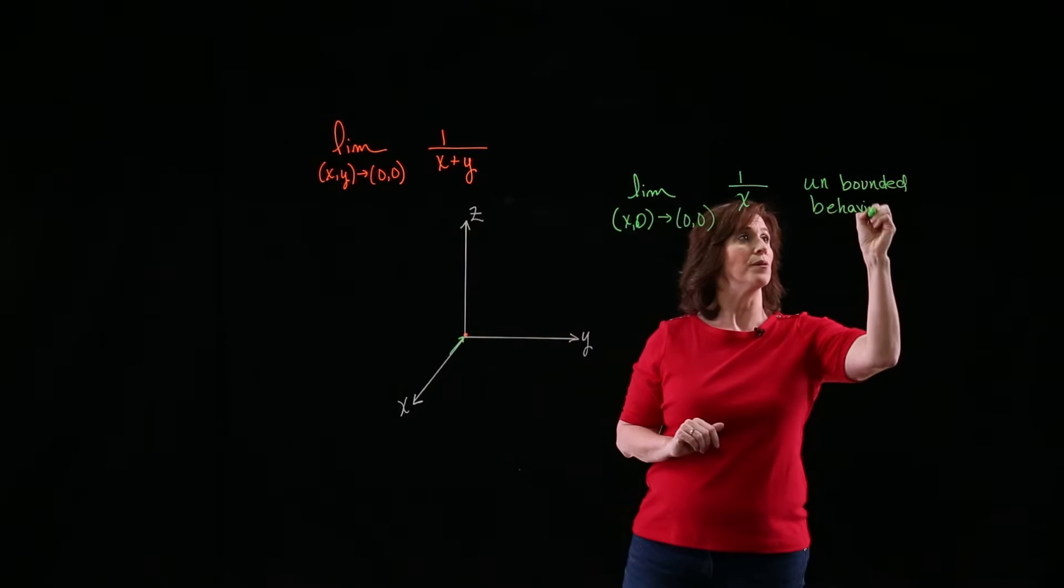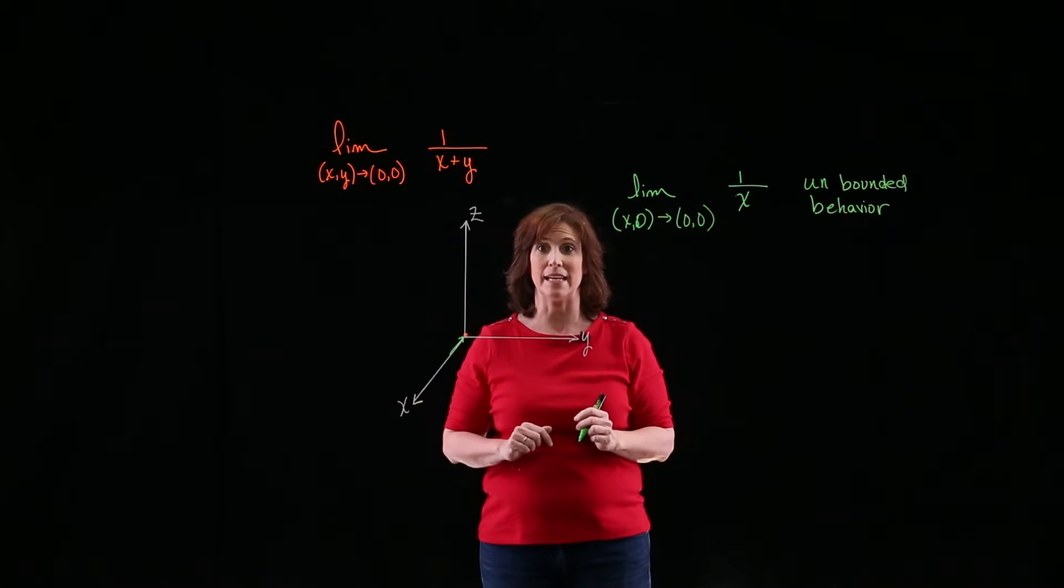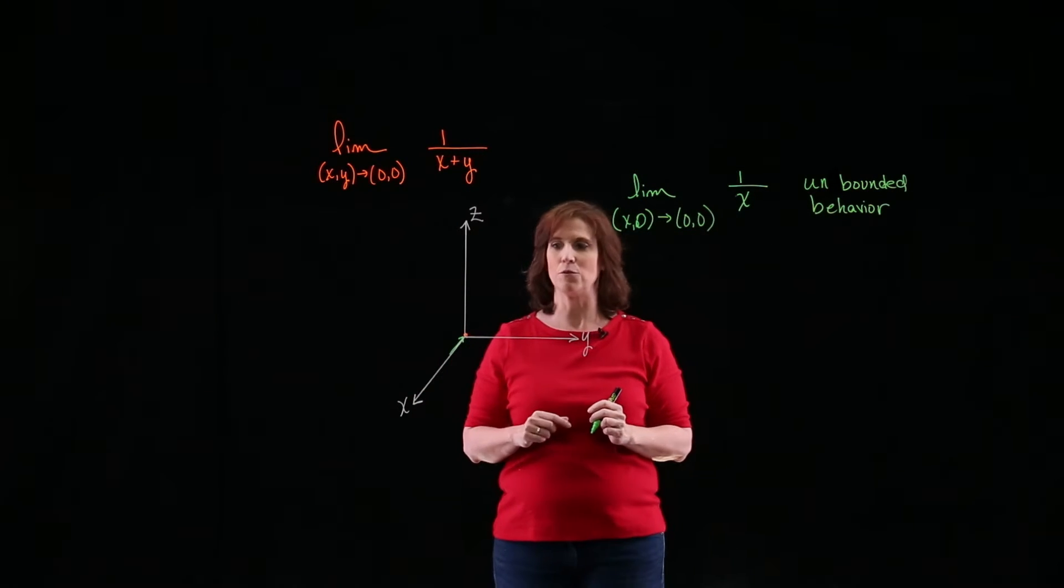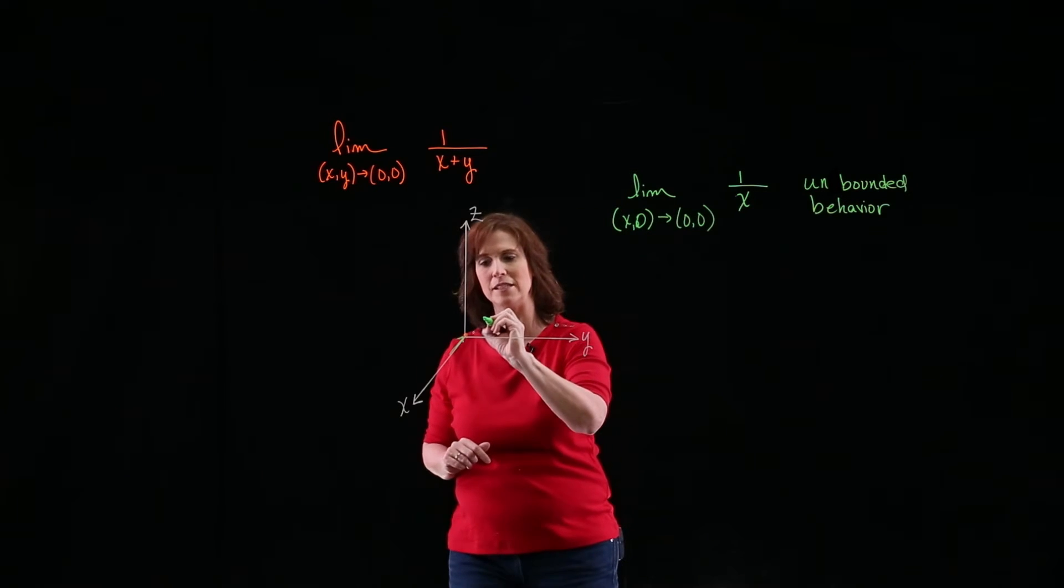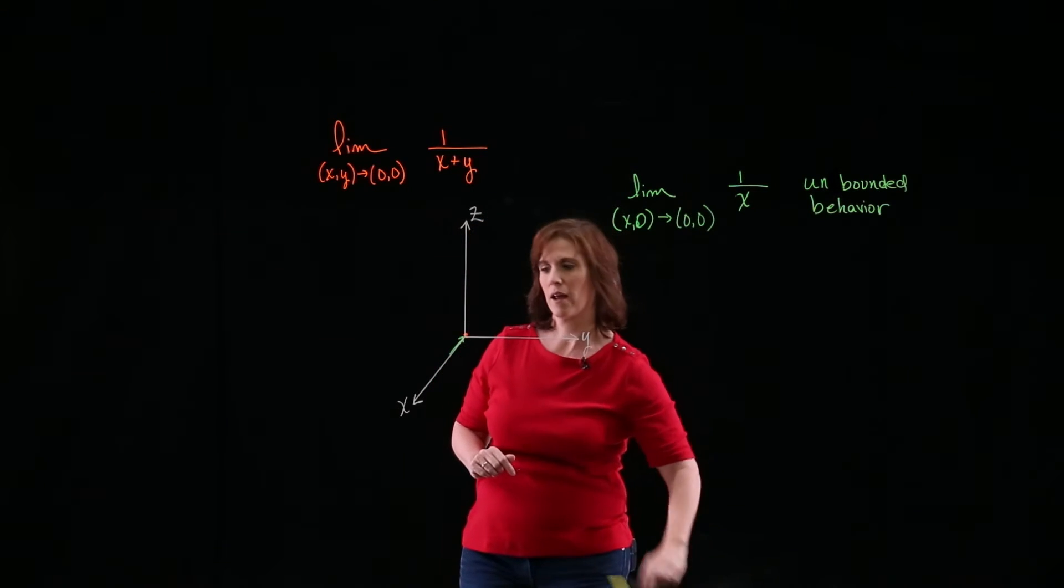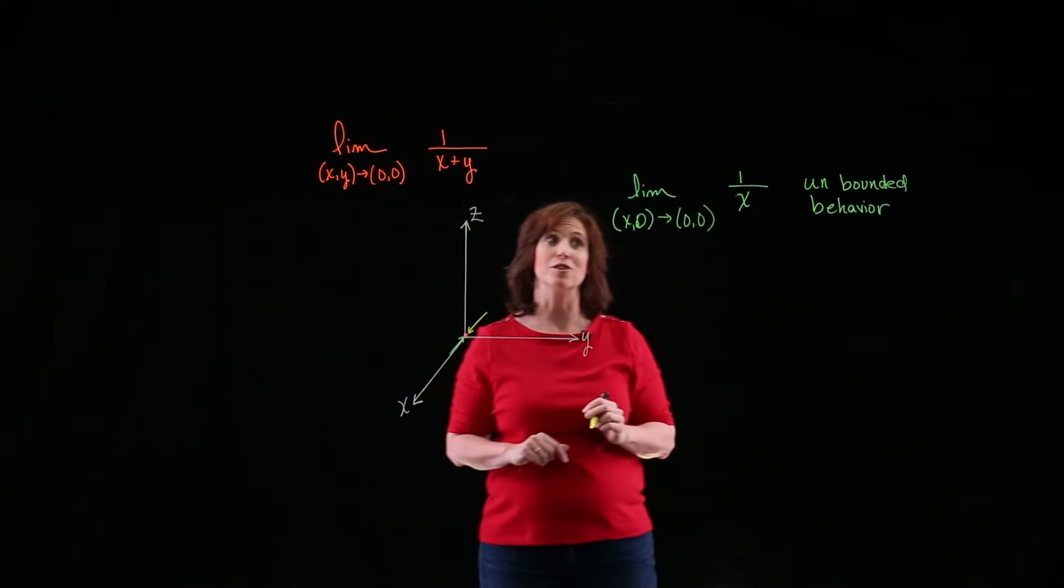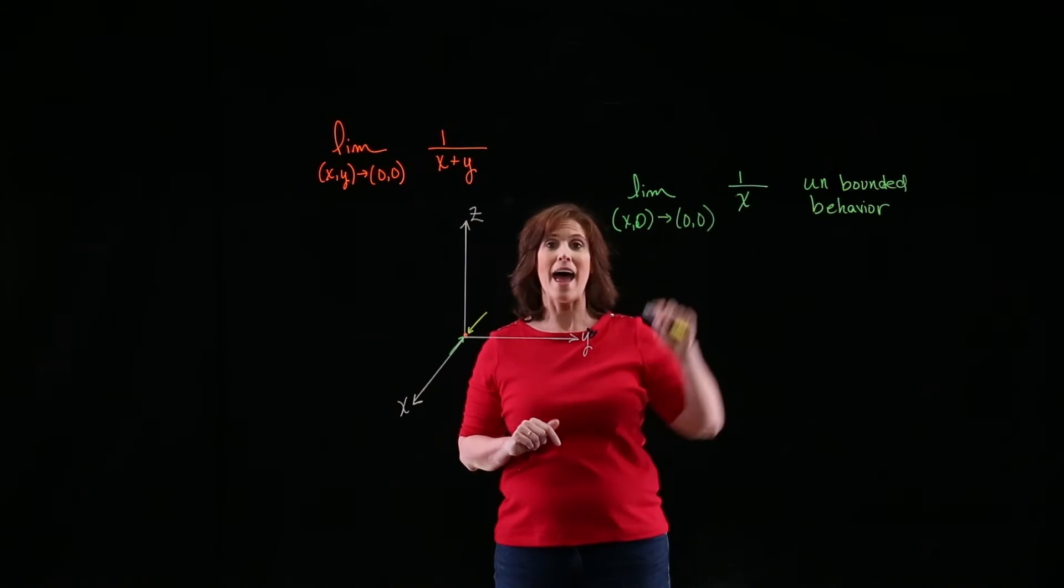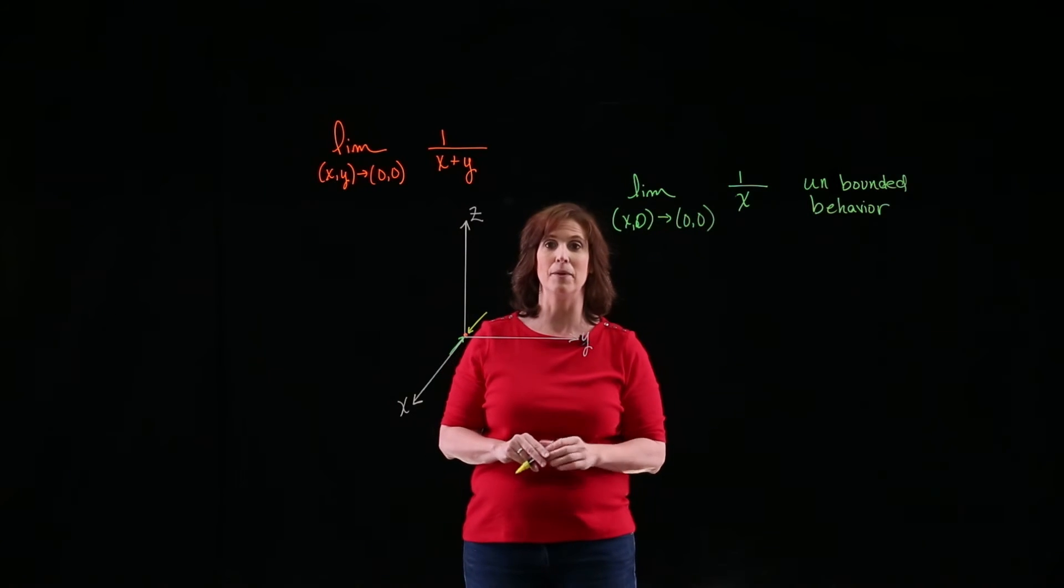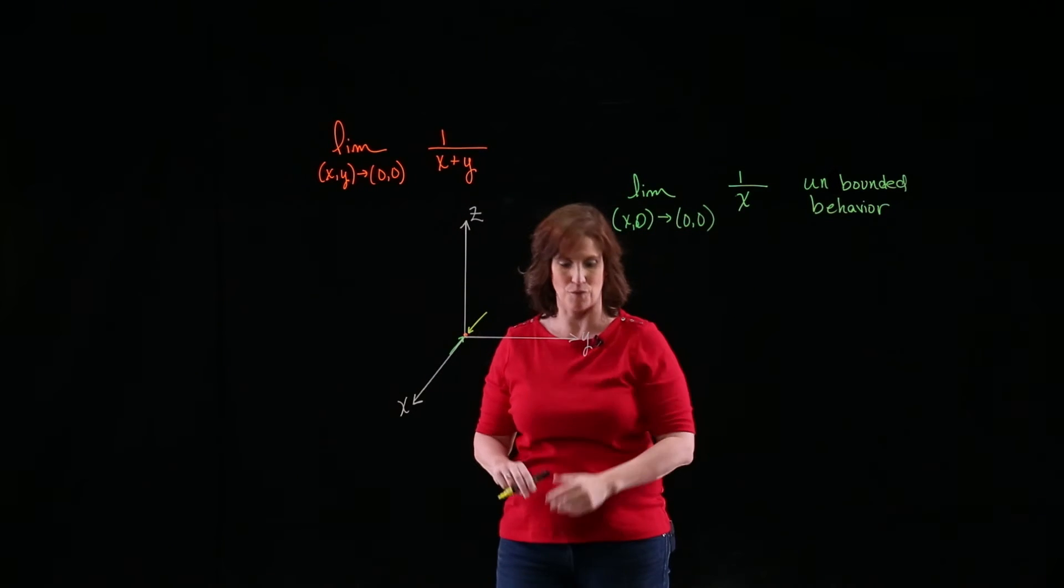Now, that alone is enough to tell me that my overall limit doesn't exist. But if you think about this from another perspective, what if you came from this direction and you were coming on the x-axis where the x values are negative? If that happens, 1 over x also has unbounded behavior, but it has unbounded behavior in a negative direction.